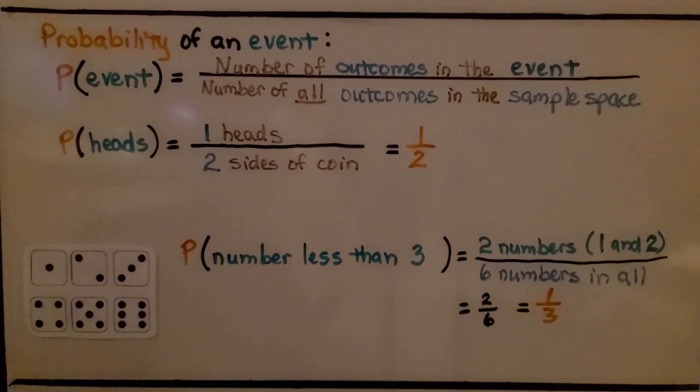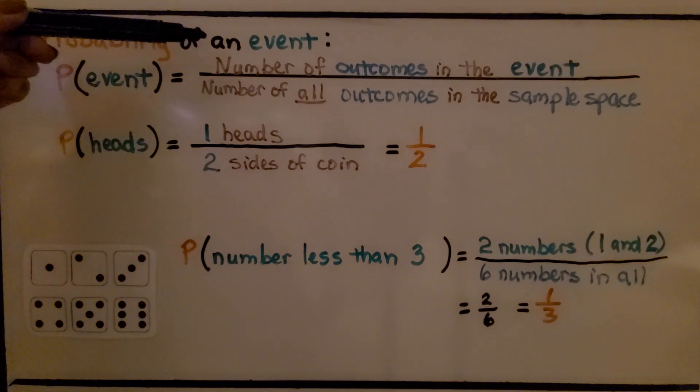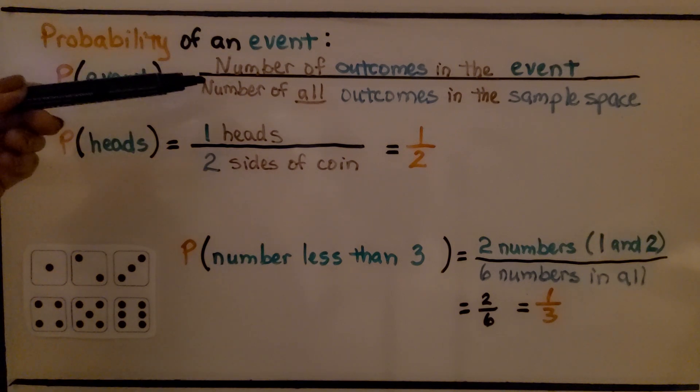Now, I introduced you to this P, parenthesis, event, close parenthesis in the last video. It's the probability of an event, and we can write it as P(event). It would be the number of outcomes in the event over the number of all outcomes in the sample space.